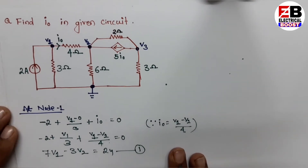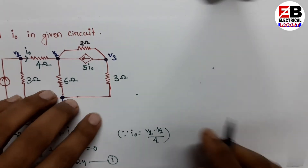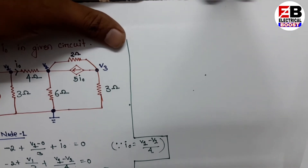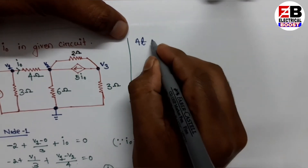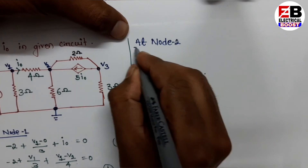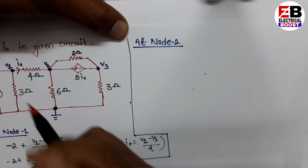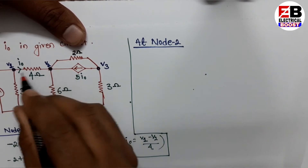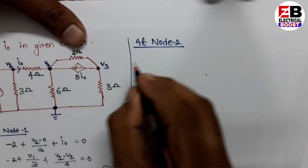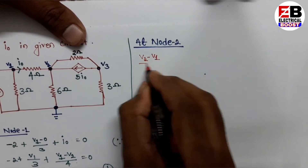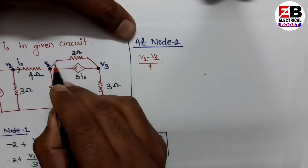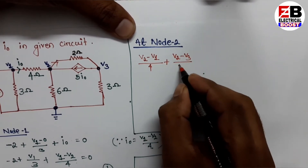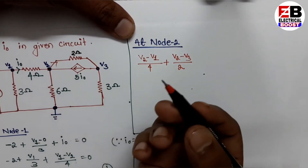Next, we apply KCL at node 2. V2 is at higher potential. The current is (V2 minus V1) divided by 4, plus (V2 minus V3) divided by 2. The dependent current source is entering, so it is subtracted.